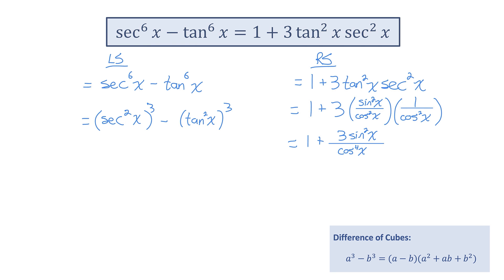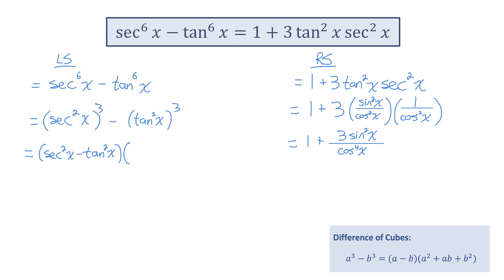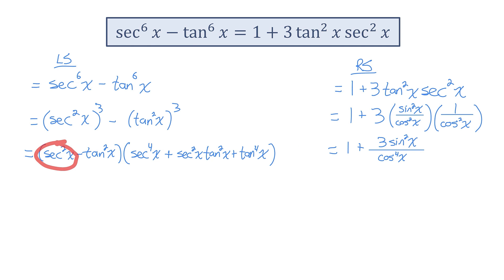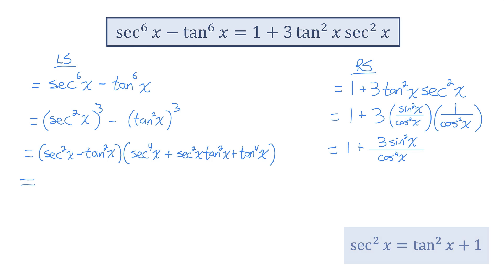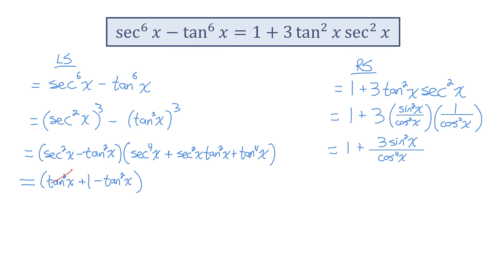I can follow the difference of cubes factoring formula. That gives (secant squared x minus tan squared x) multiplied by (secant to the power of 4 of x plus secant squared x times tan squared x plus tan to the power of 4 of x). Secant squared x equals tan squared plus 1, so replacing that in the first factor gives tan squared minus tan squared, leaving just 1. For the second factor, because I changed the right side to be in terms of sine and cos, I'm going to rewrite all the secants and tans in terms of sine and cos as well — changing secants to 1 over cos and tans to sine over cos.